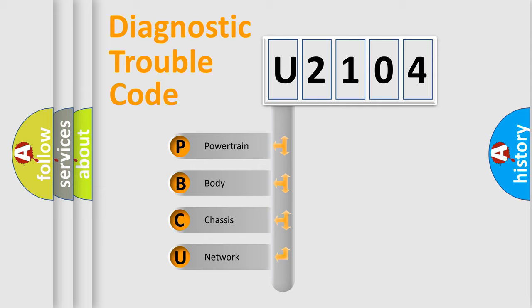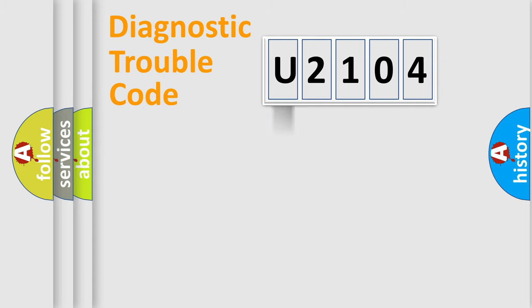We divide the electric system of automobiles into four basic units: Powertrain, Body, Chassis, and Network. This distribution is defined in the first character code.